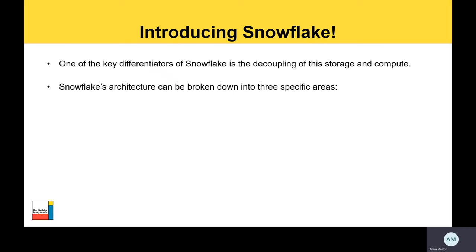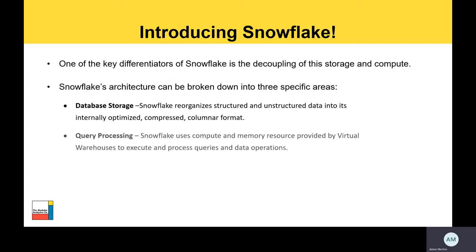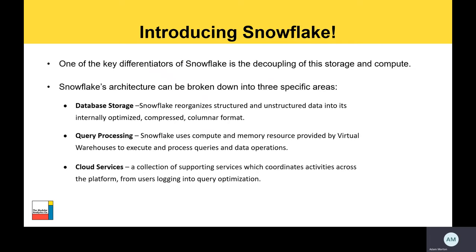Snowflake's architecture can be broken down into three specific areas. Database storage: Snowflake reorganizes structured and unstructured data into its internally optimized compressed columnar format. Query processing: Snowflake uses compute and memory resources provided by virtual warehouses to execute and process queries and data operations. And cloud services: a collection of support services which coordinates activities across the platform, from users logging in to query optimization.